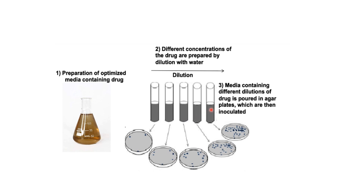The media containing different dilutions of drugs is poured into agar plates, which are then inoculated. The serially diluted media containing antibiotics is poured into petri dishes, and after pouring, bacteria are inoculated into each petri dish.